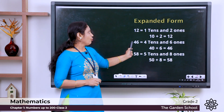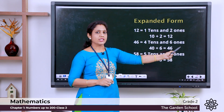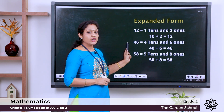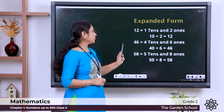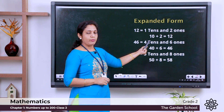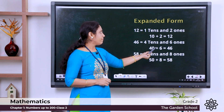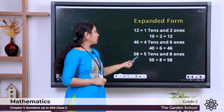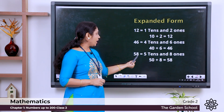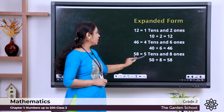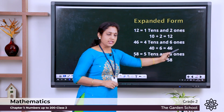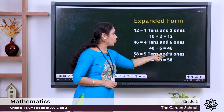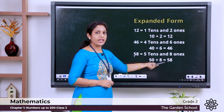We count always from the right side, that is from the ones place, but when we write, we write from the left side. So 4 tens makes 40 plus 6 ones makes 6, and the number is 46. Next, 58: it has 8 ones and 5 tens. We write 5 tens and 8 ones — 5 tens means 50, plus 8 ones, that is 8 itself, so we get 58.